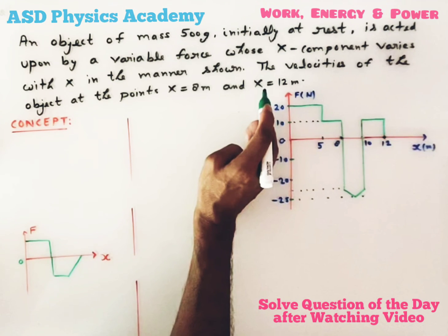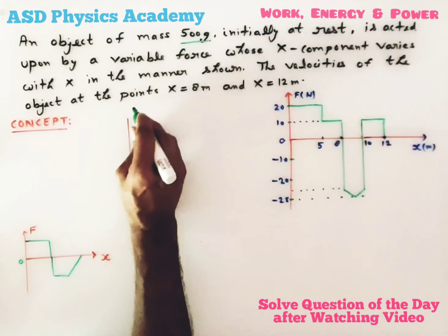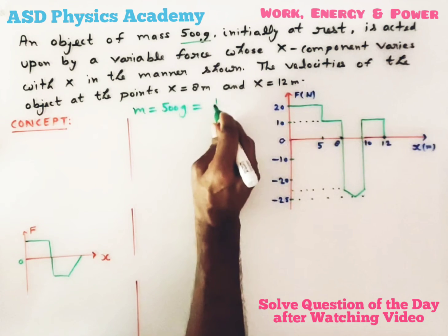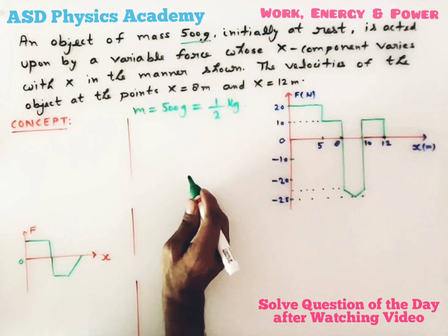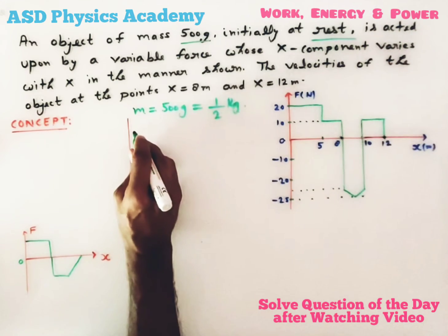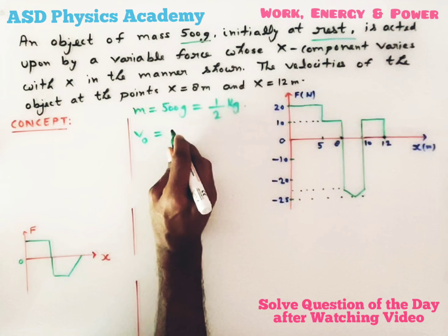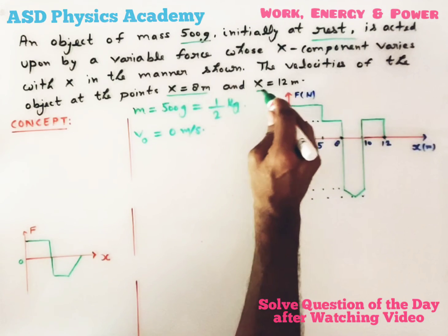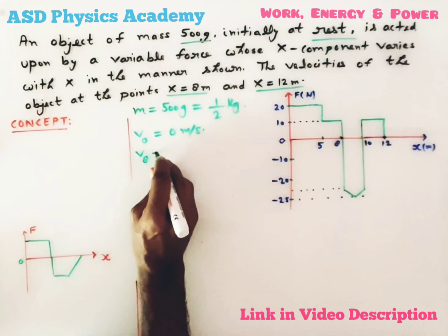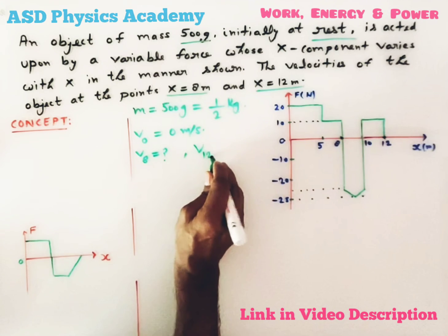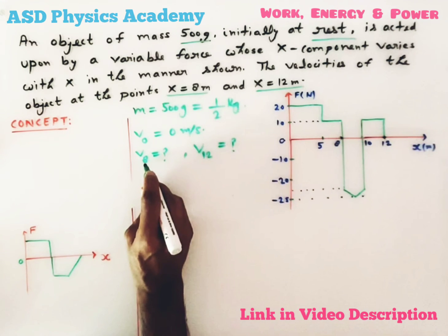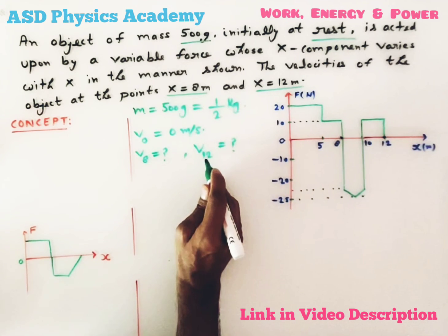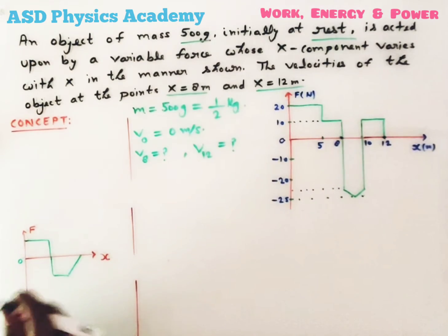According to the question, the object has mass 500 grams, which converts to half a kilogram. The object is initially at rest, meaning at t equal to 0, v-naught equals 0 meters per second. We have to calculate the velocity at x equal to 8 meters — call it v8 — and the velocity at x equal to 12 meters — call it v12.